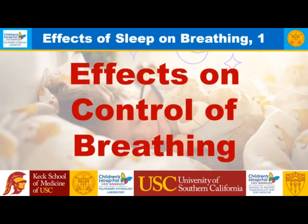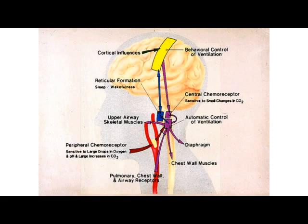What are the effects on control of breathing? There are basically two types of control of breathing: behavioral control, anatomically housed in the cerebral cortex, and automatic control, anatomically housed in the brainstem. The reticular formation, which controls your state of sleep or wakefulness, is located anatomically fairly close to the control of breathing centers. So it is not surprising that sleep would have a profound effect on control of breathing.